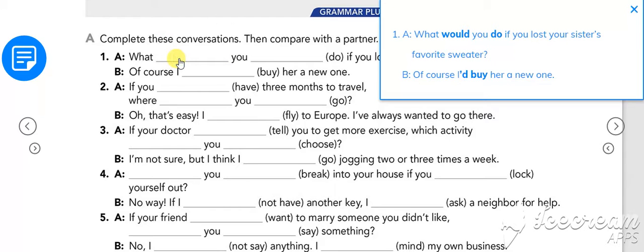Number one: what would you do if you lost your sister's favorite sweater? You're gonna write would on the first line and do on the second line. Of course I'd buy her a new one. And this means ¿qué harías si perdieras el suéter favorito de tu hermana? La respuesta por supuesto que le compraría uno nuevo.